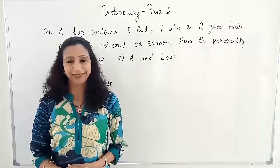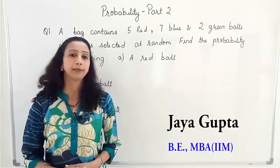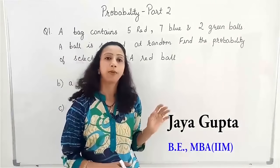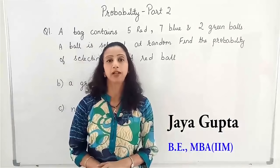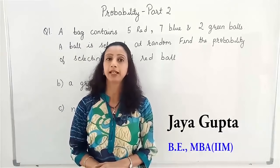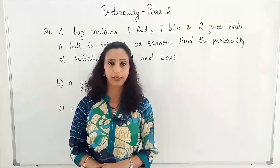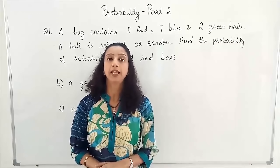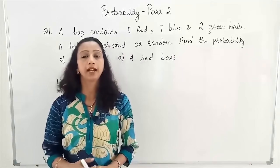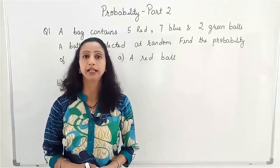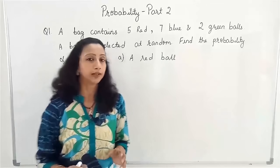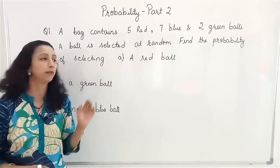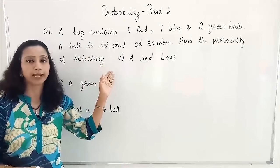Welcome to part 2 of probability. In part 1 we had learnt about random experiments and then about probability. Probability is the certainty of occurring of any event. For example, if I am tossing a coin I get two outcomes — either a head or a tail — and that is certain. That is called probability. We have seen some examples last time, and now we are doing some new examples.